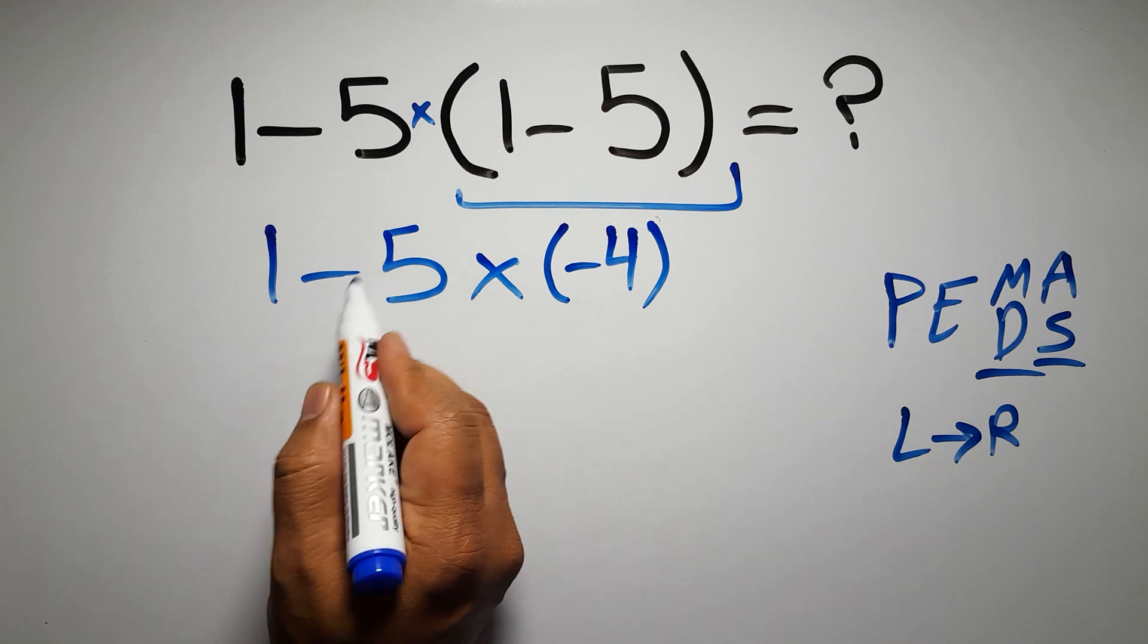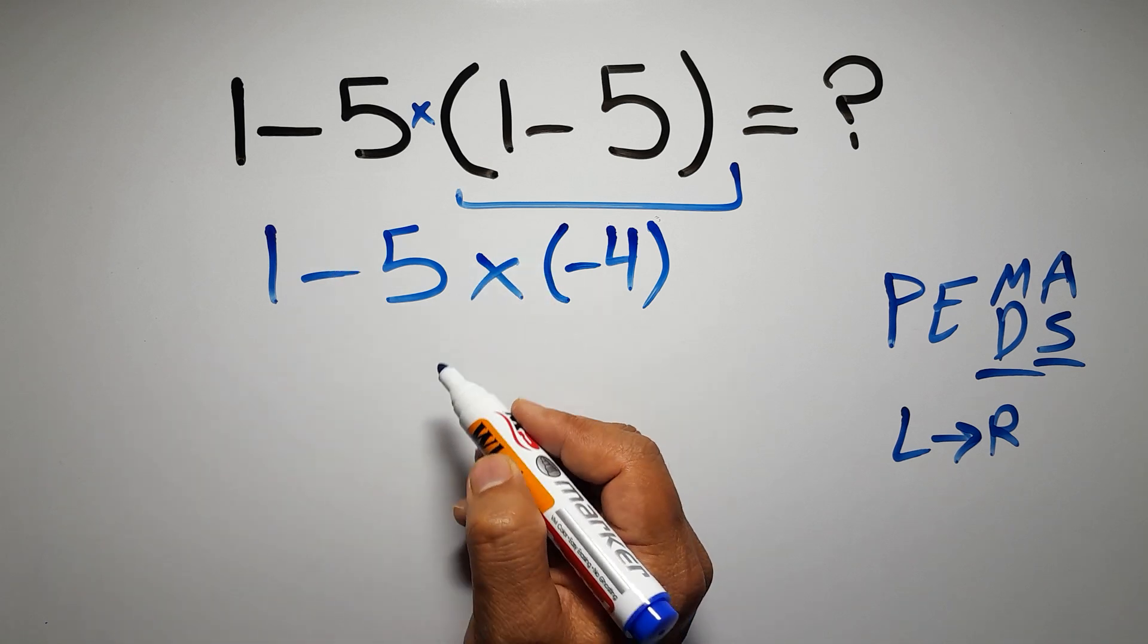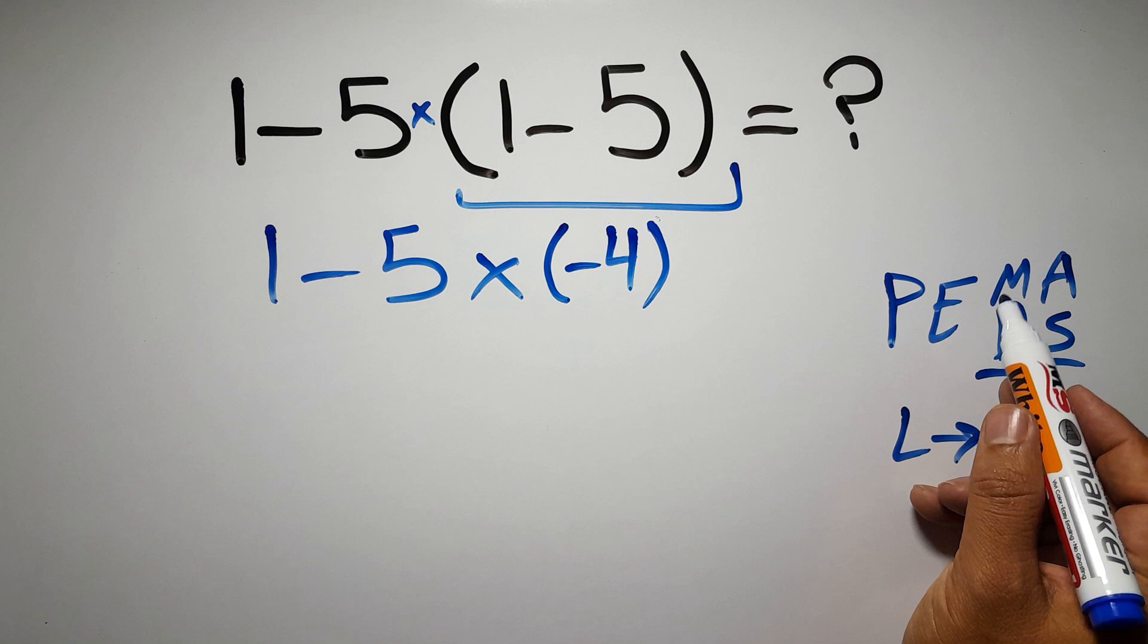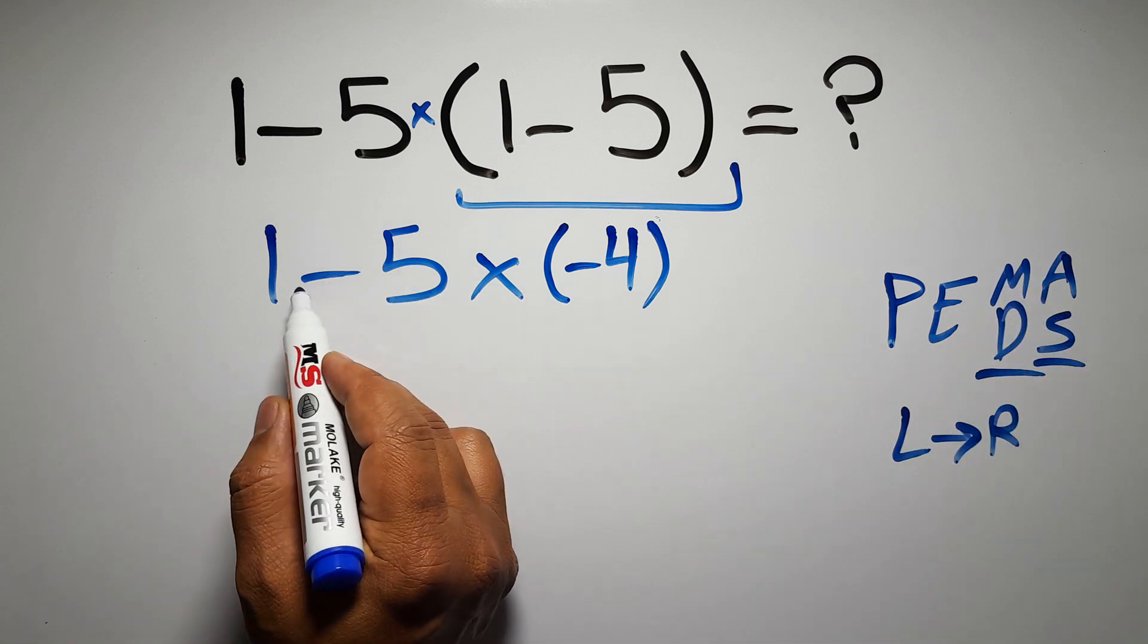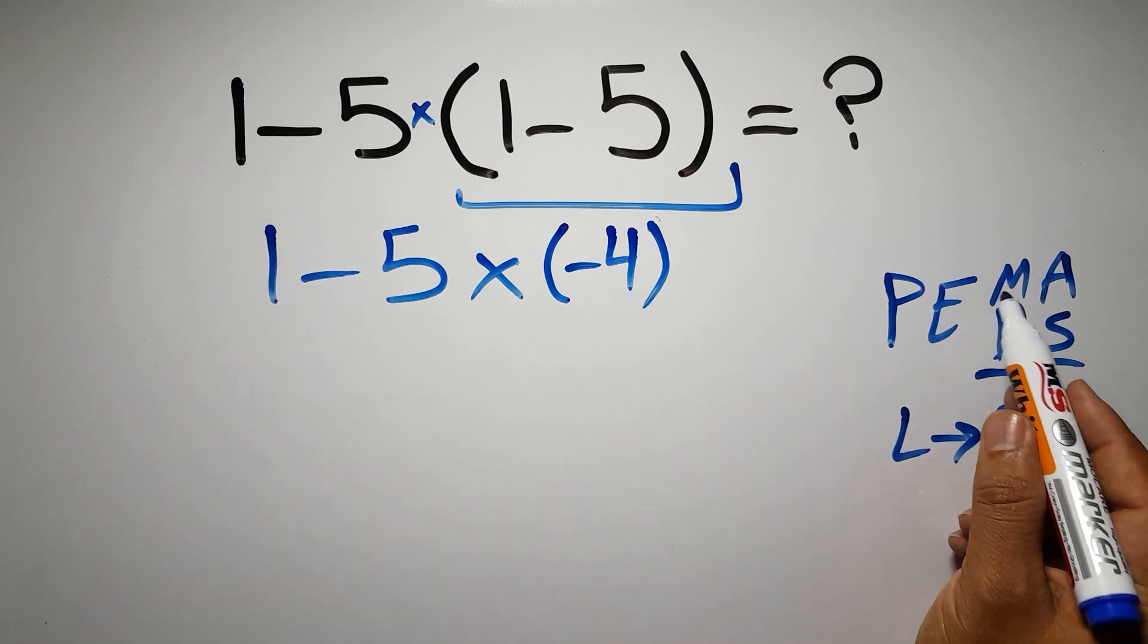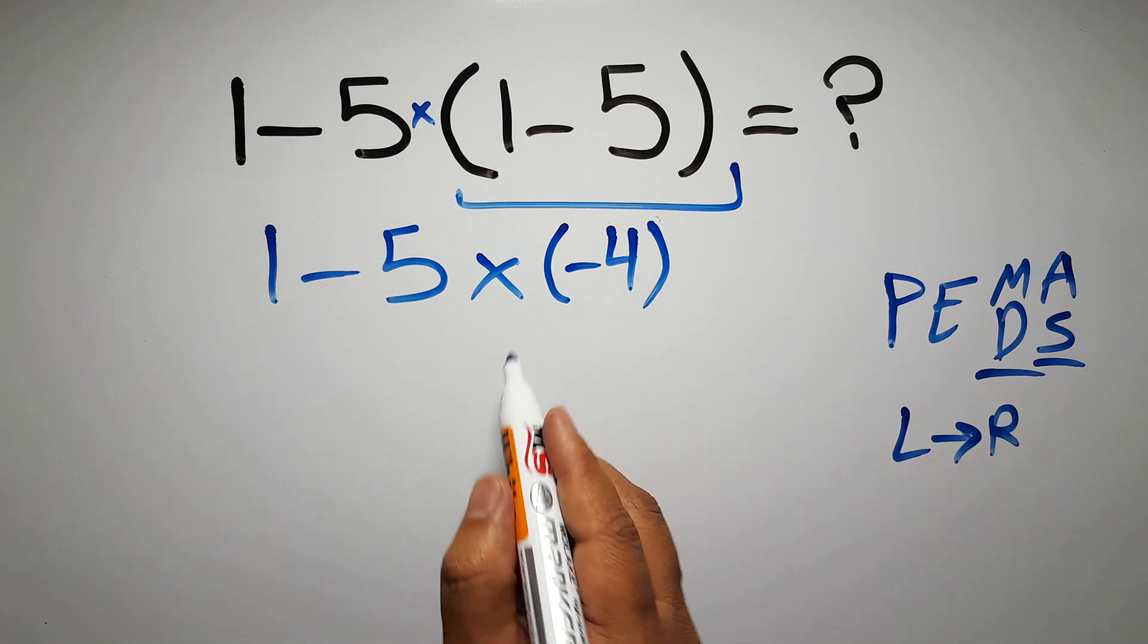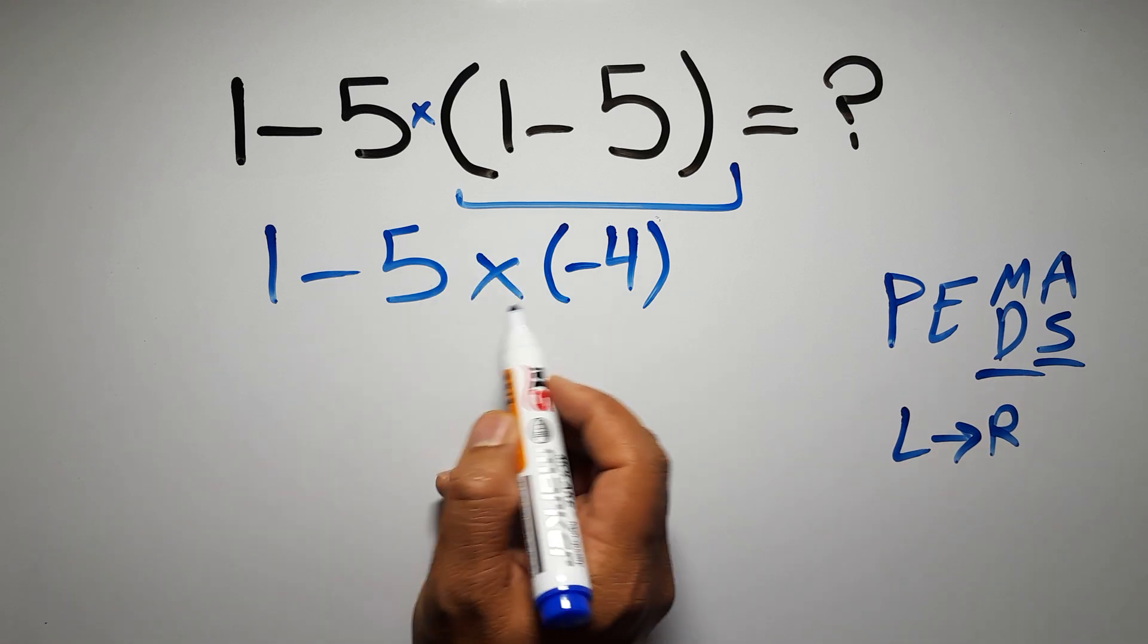Now we have 1 subtraction and 1 multiplication. According to the PEMDAS, multiplication has higher priority than subtraction, because multiplication comes before subtraction. So here, first we have to do this multiplication.